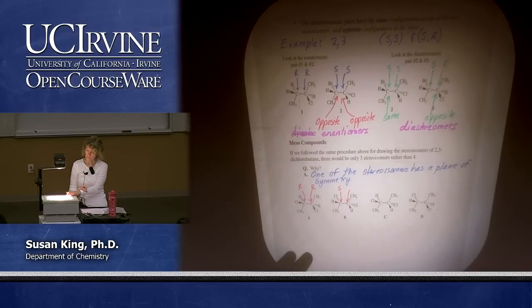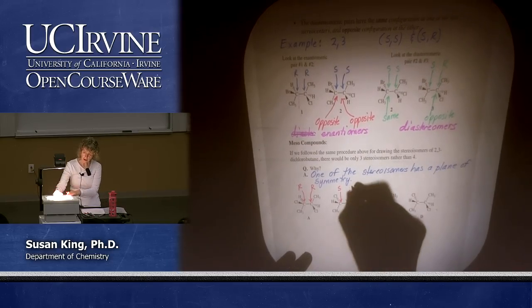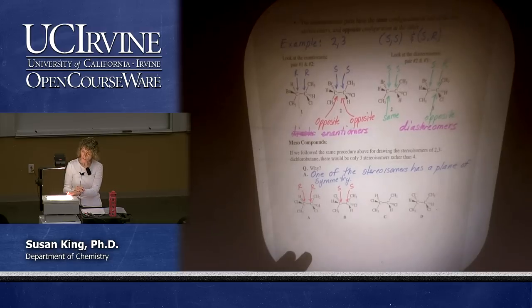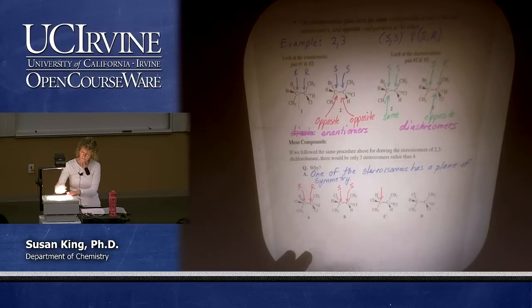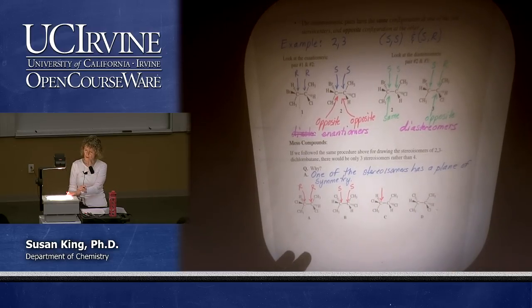What about the carbon on the right? We've also switched two groups, so that's S as well. And then looking at the next structure: the carbon on the left is R and the carbon on the right is S.